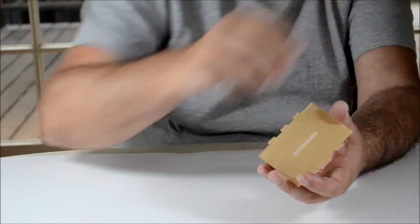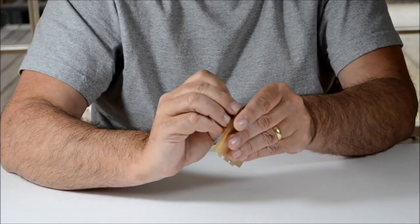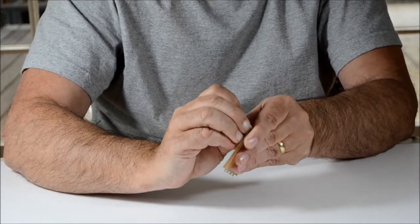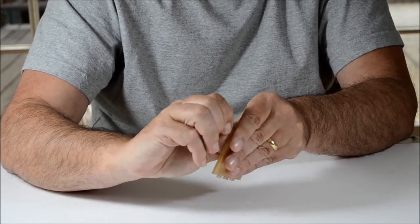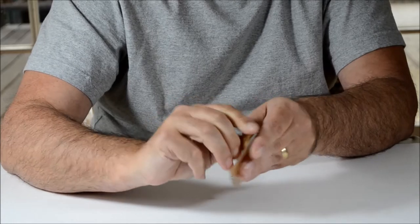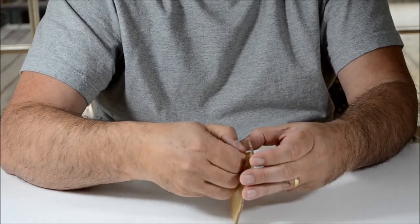We'll do that with the other side as well here. Start again by peeling it off at the corner, and once we have a corner, then it peels off pretty easily.